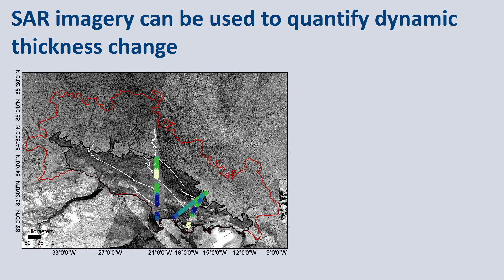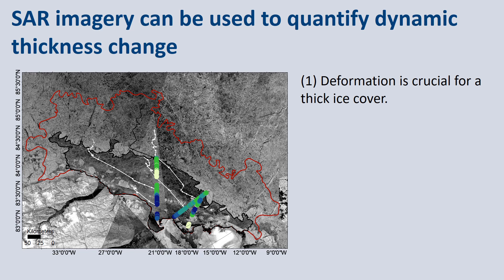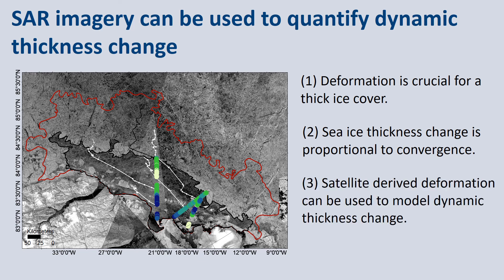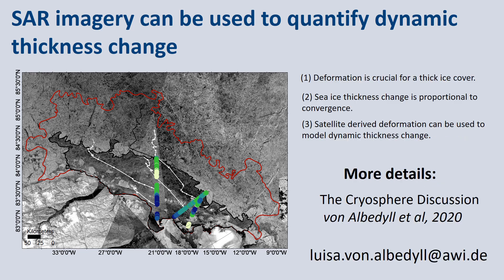To summarize: SAR imagery can be used to quantify dynamic thickness change, which is really important because deformation is crucial for a thick ice cover — in our example, convergence doubled the ice thickness. We need to learn more about this and represent it correctly in sea ice models. SAR imagery can provide valuable insights because sea ice thickness change is proportional to convergence observed from satellite. This is an important milestone as it gives us the opportunity to calculate thickness change from satellite-derived deformation. Given how widely available SAR imagery is now in the Arctic, there is large potential to study dynamic thickness change on pan-Arctic scales. More details are in our publication currently under review. I look forward to your questions on December 8th or via email.